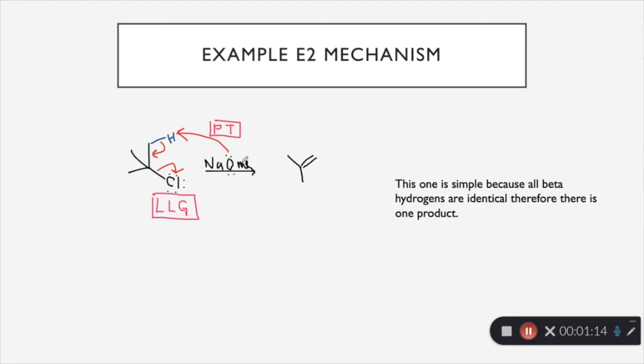We can see here that the base, sodium methoxide, is going to grab that beta-hydrogen. It is going to donate its electrons back to the sigma bond, and that is going to kick out the leaving group. It's super important that you draw all of the arrows correctly going from where the electrons are going to.